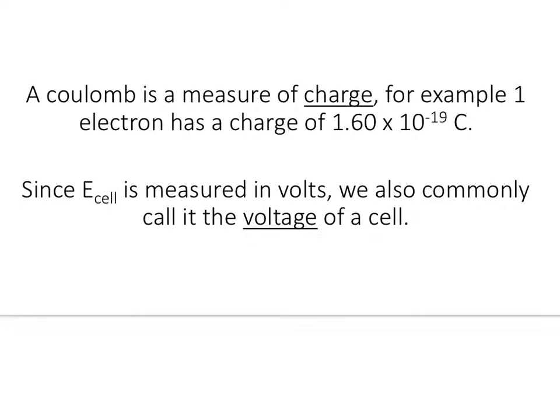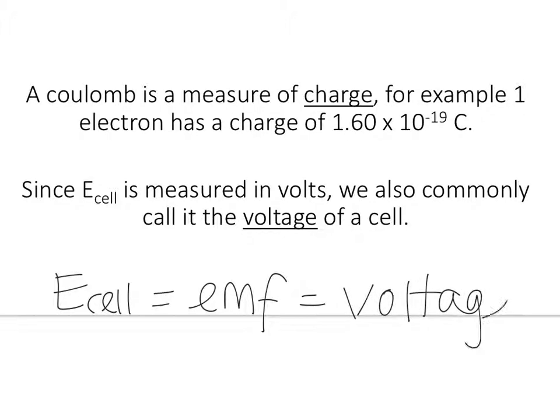Now, a coulomb, though, is actually a measure of charge. For example, one electron has a charge of 1.60 times 10 to the negative 19th coulomb. That's how we say that electrons have negative charges. We're measuring their charge. The negative is more relative to protons and stuff. But since our cell potential is measured in volts, we, as I mentioned before, also commonly call it the voltage of our cell. So again, cell potential is the same thing as the electromotive force, which is also called the voltage.